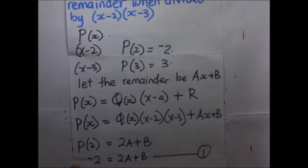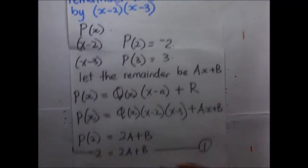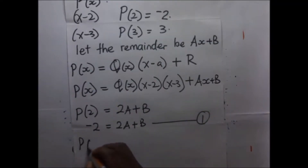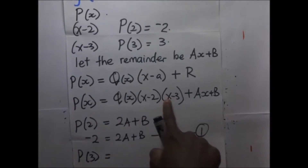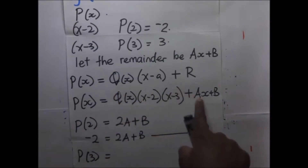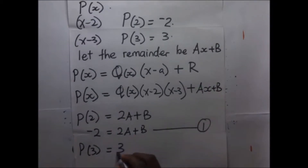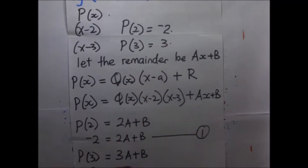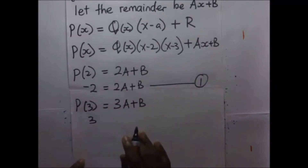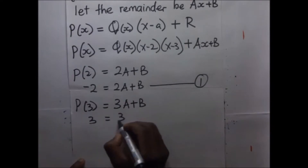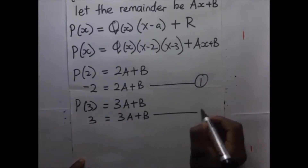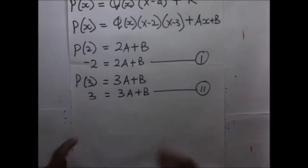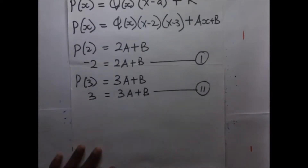Now for P of 3: when we feed in 3, 3 minus 3 is 0, so that whole term dies and we remain with 3A plus B. Remember P of 3 is 3, so 3 gives us 3A plus B equals 3. That's our second equation, and we solve them simultaneously.